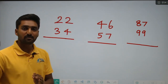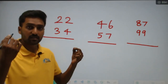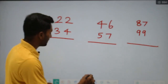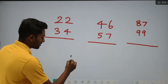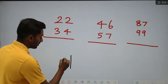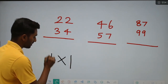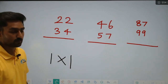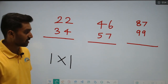What method do we use? Look at what happens when you look at the number line. The method is: straight, cross, straight — that is, straight cross straight.